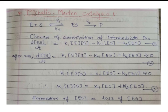Now that we have identified our intermediate, we find the rate of change of concentration of the intermediate with respect to time: d[ES]/dt. Initially, ES is formed from E and S with rate K1, so we write K1 times [E] times [S]. This formation term is positive.